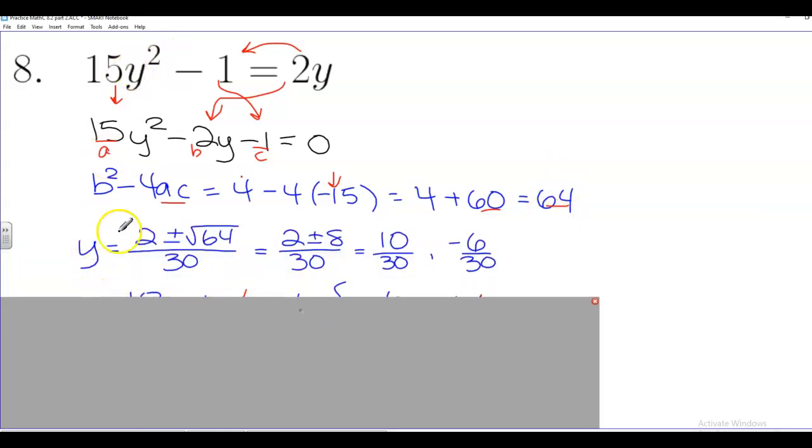So y, which is our variable here, is going to equal the opposite of b. Well, notice b is negative 2. So opposite of that is positive 2. Plus or minus the square root of 64, all divided by 2 times a.